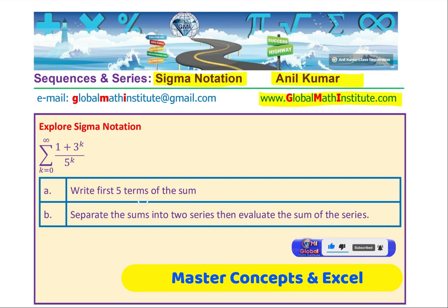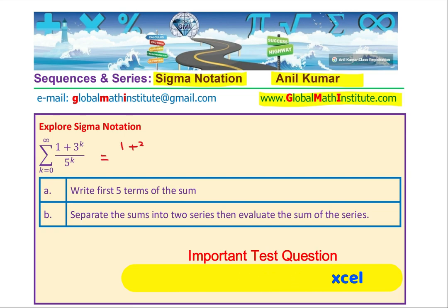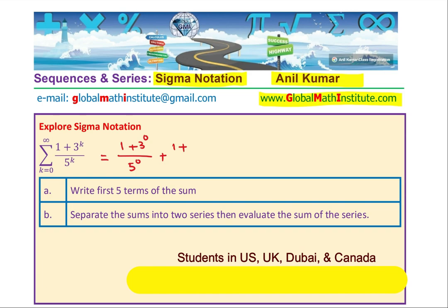So we can write the first 5 terms of this series. K will be from 0 to 4 in that case. So let us do part A first. We could expand this and if k is 0, then we get 1 plus 3 to the power of 0 over 5 to the power of 0, and so on, we will write the first 5 terms.